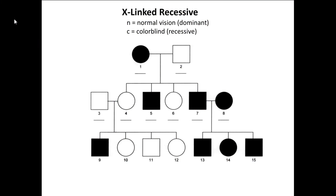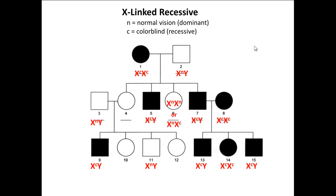Colorblindness is a classic X-linked recessive trait — a gene found on the X chromosome only. Looking at this pedigree, if you're filled in, you have the recessive phenotype. This first individual is male, so he has to be XY, and not colorblind, so that X carries the normal gene. This female is XX, and because she's colorblind, she must be homozygous recessive. Any female that's colorblind has to be homozygous recessive. For the males, if they are colorblind they have the colorblindness allele on their X, and if they don't, they are normal. The only thing to figure out is whether the unaffected females are carriers or homozygous dominant.